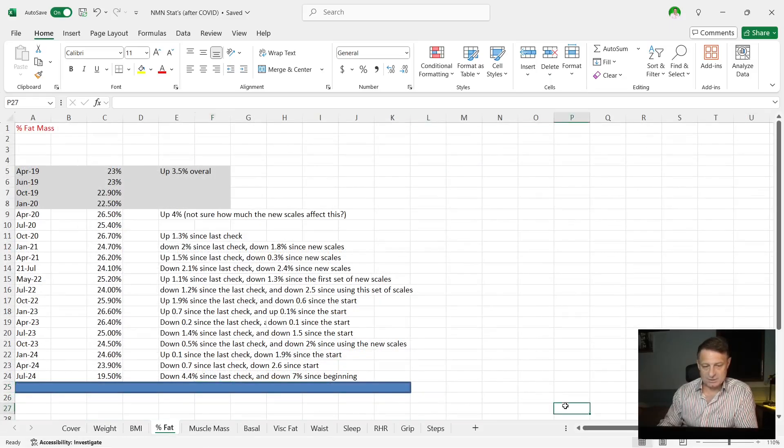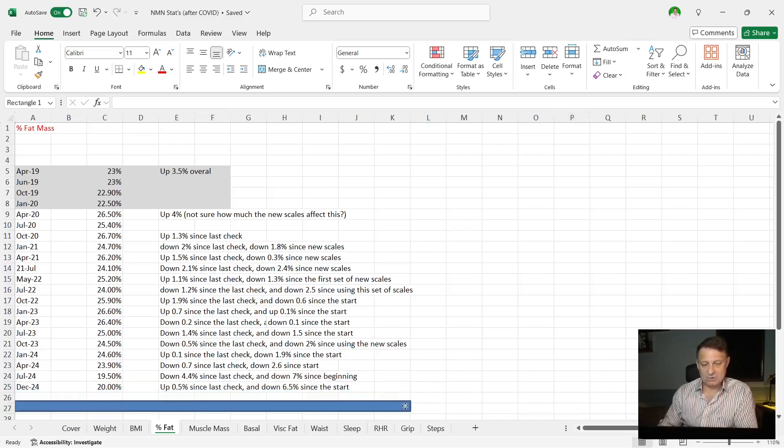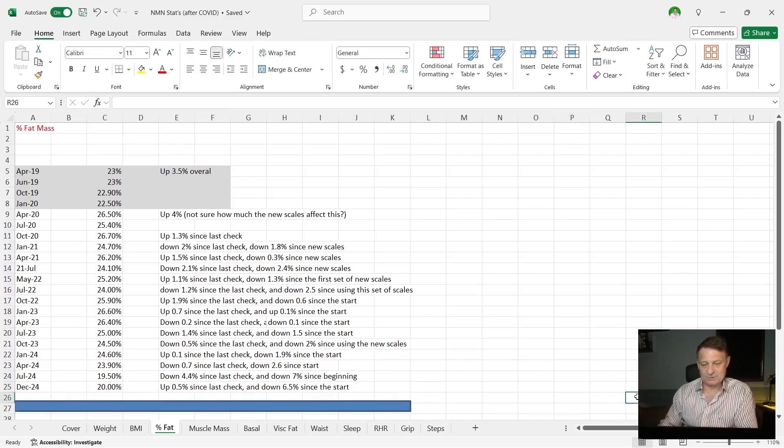Percentage body fat. You can see it was 19.50. That's now 20% body fat, which is up 0.5, which is not good since the last check, but still down 6.5 since the start.